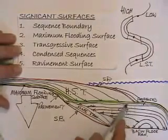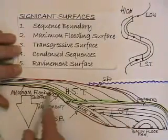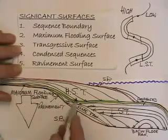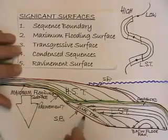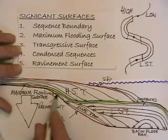And then within the sequence, we have the maximum flooding surface, which represents the surface on which the highstand system track builds out.